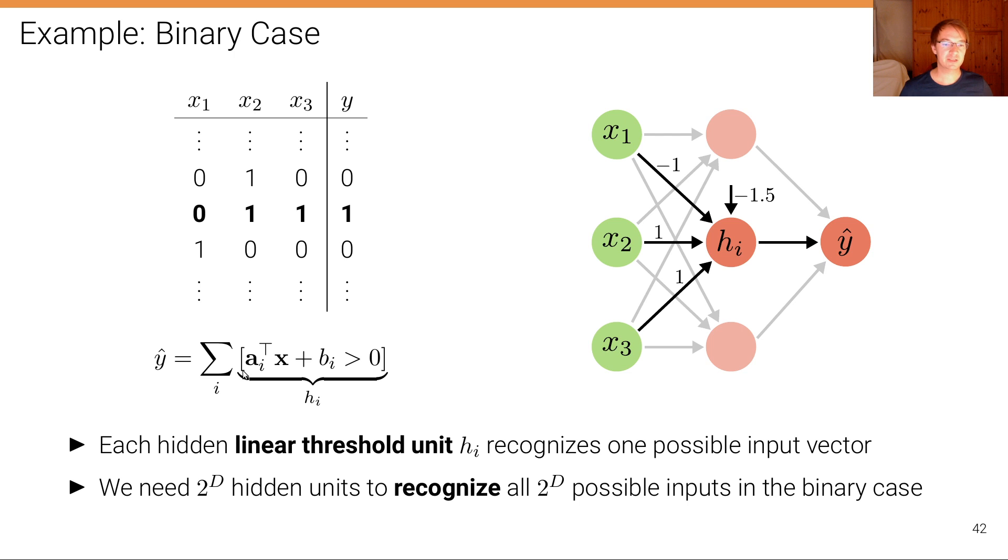So they are basically the units that we've seen in the perceptron algorithm where we have an affine transformation and a comparison. So this is comparing if the result of this transformation is bigger than zero or not. Each of these hidden neurons is connected to all input variables x.